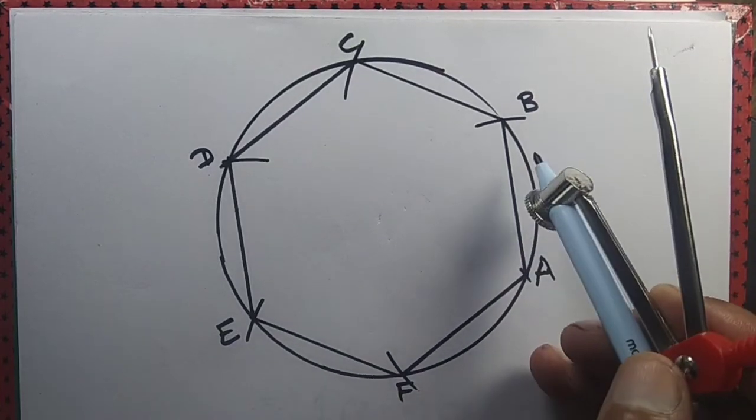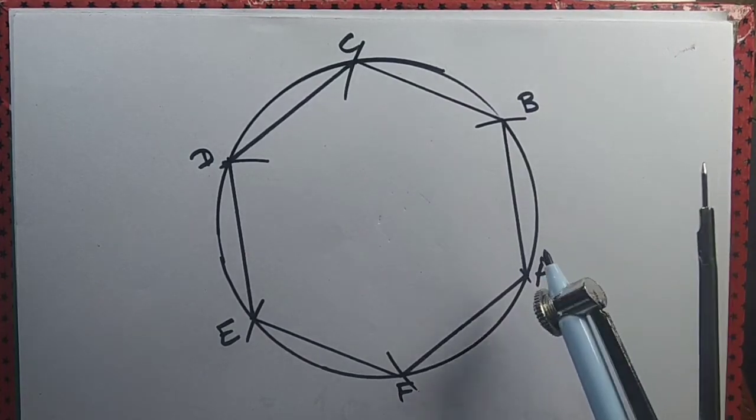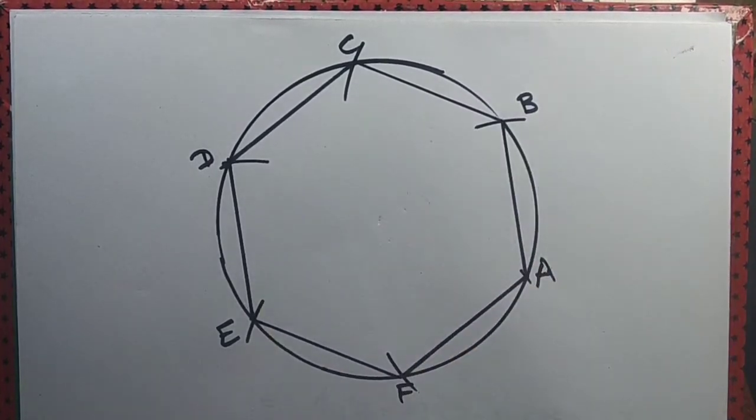Further, we observe that we have not just drawn a regular hexagon but also a circle that circumscribes the regular hexagon.